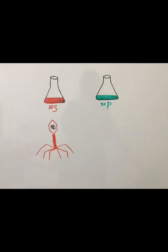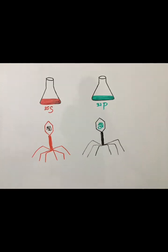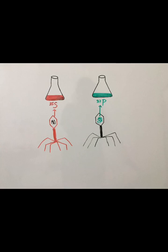Viruses that grew in the radioactive sulfur had radio-labeled proteins, as sulfur is not present in the DNA, but only in the proteins. Viruses that grew in the radioactive phosphorus had radio-labeled DNA, as phosphorus is present in the DNA and not the protein.